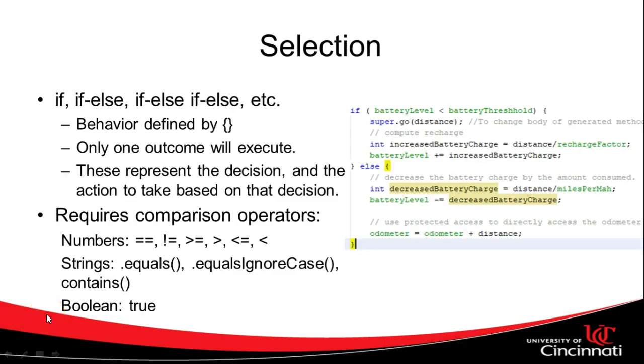The next one is selection. Selection is where we are going to pick or select one out of several possible outcomes. We typically know this in programming terms by using if, if else, if-else-if-else, and several other constructions where we say, if this condition is true, then have this outcome. Else, if that condition is not true, then have a different outcome. We're only going to do one of these two outcomes at a time.